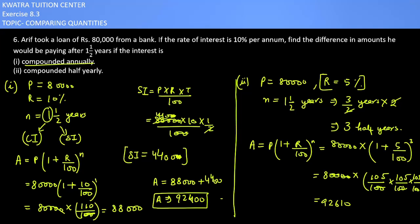Now you can see in the first case it was 92,400, in the second one it is 92,610. So what is the difference in amount? It is 92,610 minus 92,400, which equals 210 rupees. This is the difference you are getting.